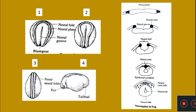The fusion of the neural folds begins just in front of the mid-region and then progresses both anteriorly and posteriorly until the tube is completely fused. At the anterior end, even though the folds meet, an opening is left called the neuropore. At the posterior region there is already the blastopore, so at the posterior end there is the blastopore, and at the anterior end there is the neuropore.